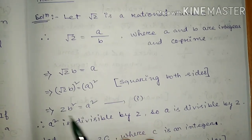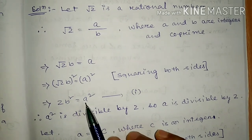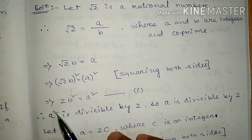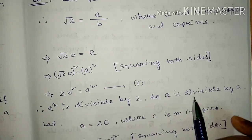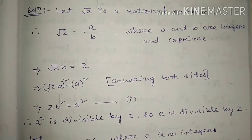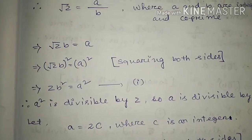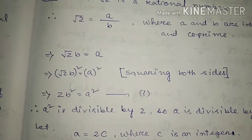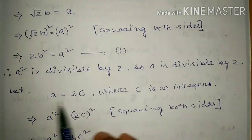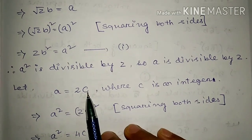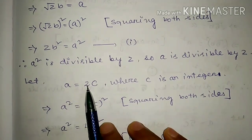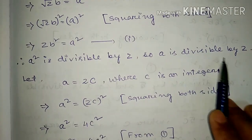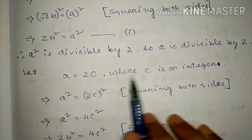From this expression, A squared is divisible by 2, so A is also divisible by 2, by the previous theorem. If A is divisible by 2, we can express A as 2C, where C is some integer. Now squaring both sides: A squared equals 4C squared.